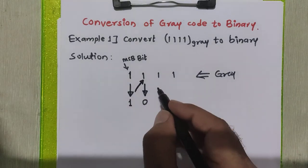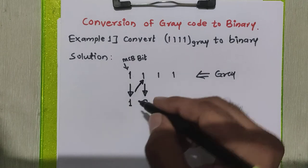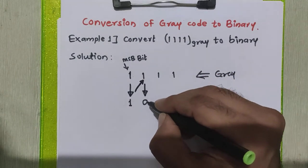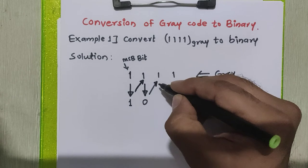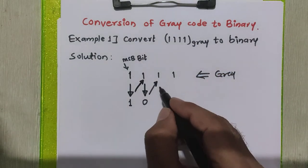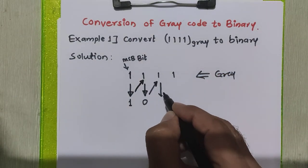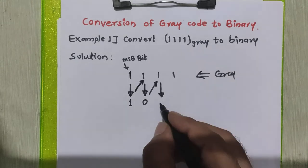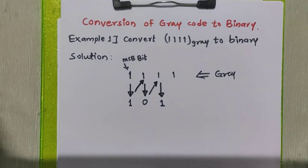To get the next bit of binary, we will add the second bit of binary with the third bit of grey code, and the sum is written here. The sum is zero plus one is one, with no carry generated.